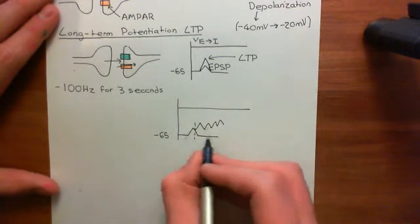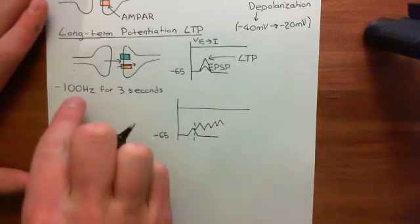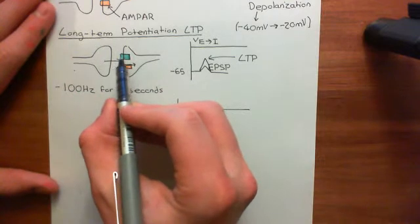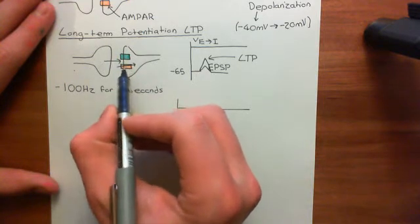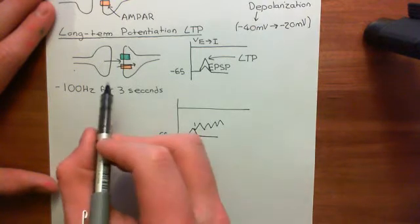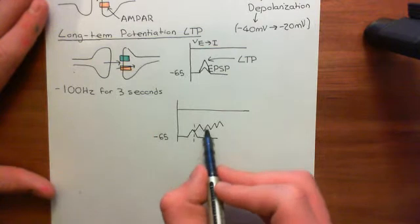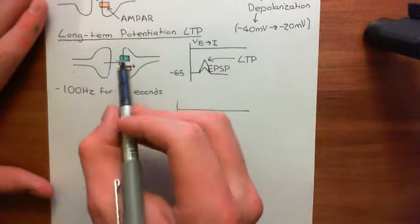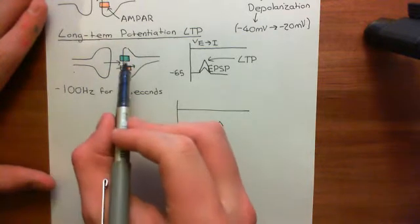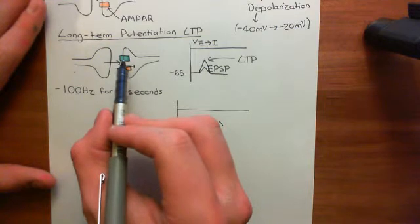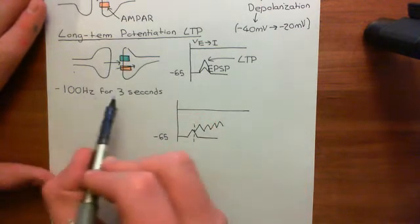When you're stimulating at this horrendous rate, you're going to be opening the AMPA receptors again before you've actually got rid of all that excitatory postsynaptic current from the previous stimulation. So you're going to be building up more and more excitatory postsynaptic current, building up a bigger and bigger excitatory postsynaptic potential — the membrane becomes more and more depolarized. Gradually, it's going to become so depolarized that the magnesium ion in the NMDA receptor comes out.